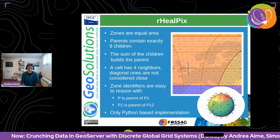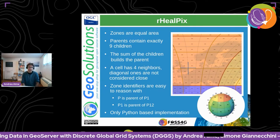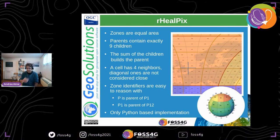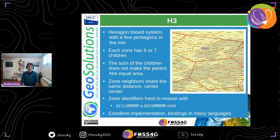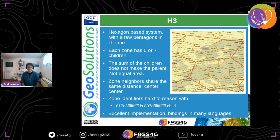One limitation of rHEALPix is that it only has a Python-based implementation, which caused troubles integrating it with GeoServer. H3 is a hexagon-based system with a few pentagons mixed in — typically over the seas to avoid issues with deformation. Each zone has six or seven children. Interestingly, the children do not make up the parent perfectly; they overlap only partially. And H3 is not equal area.